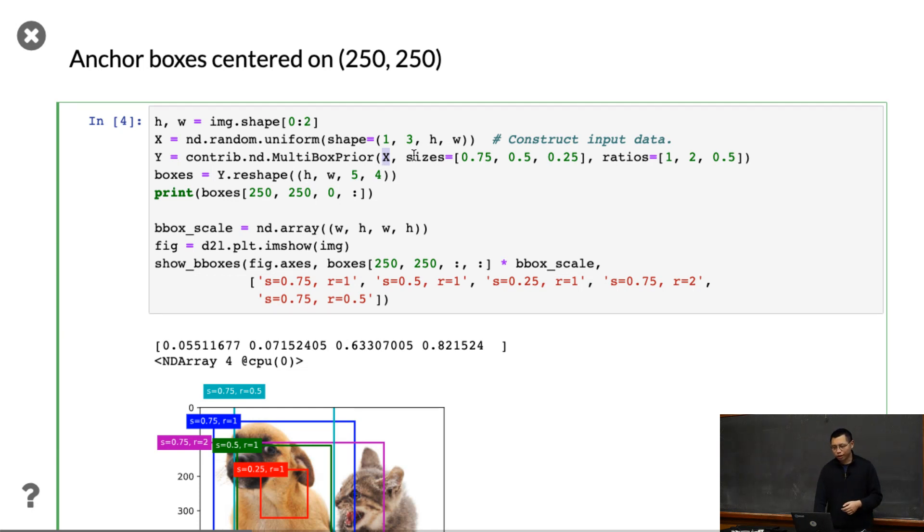You can control the size, which is relative to the original image. 0.5 means I can generate a bounding box that has 50% of the size of the original image. The ratio is the height to width ratio. 1 means it's a square, and then 2 and 0.5.